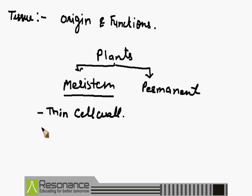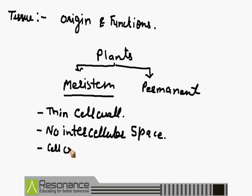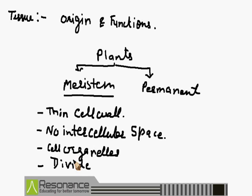Second, these cells have no intercellular space. Intercellular space means the space present between two cells — the space between the cells we call intercellular space. These cells have many cell organelles in their structures. Another important point is these cells continuously divide and form new cells — we call them meristematic tissues. These are the certain features of the meristem.